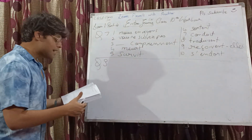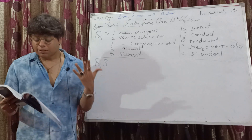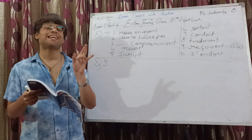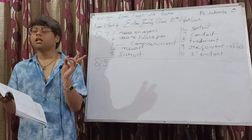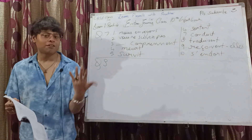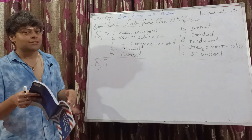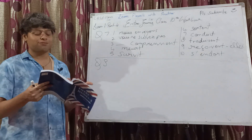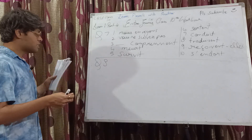Now we have question number 8 — a pretty interesting question. Mettez les phrases suivantes: number 1 à la forme interrogative, number 2 à la forme négative. For interrogative form we have three forms: intonation, est-ce que, and inversion. I have done one in intonation, two in est-ce que, and two in inversion. It's not specified which form to use, but it's good practice to cover all three.